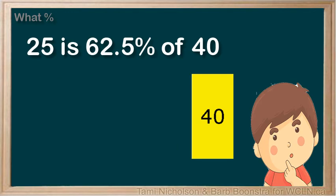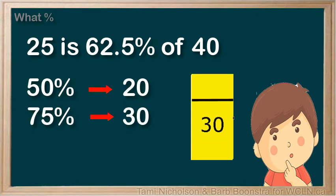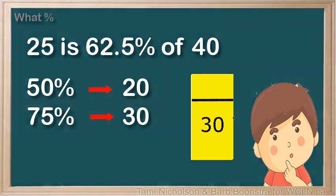Use estimation to see if this is in the correct range. Think half: 50% of 40 is 20, and three quarters, 75% of 40 is 30, so 25 could easily be 62.5% of 40.